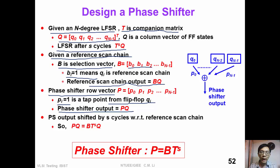So the phase shifter output can be simply represented by P times Q. We know that the phase shifter output is shifted by S cycles with respect to the reference scan chain. So we can have this equation. PQ is equal to B times T^S times Q.